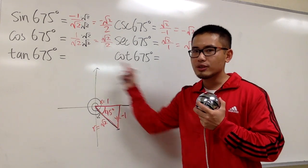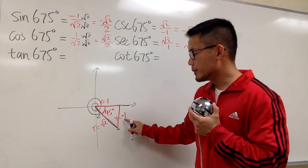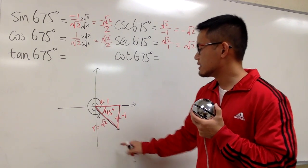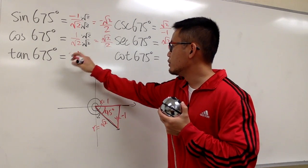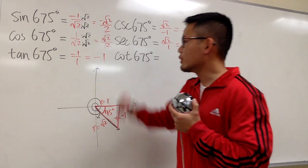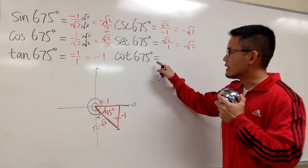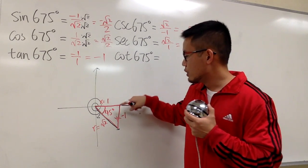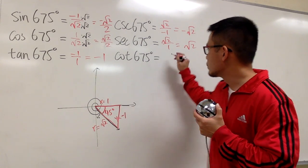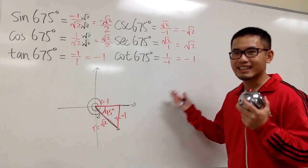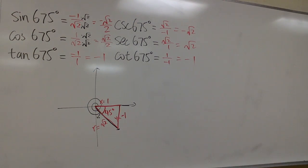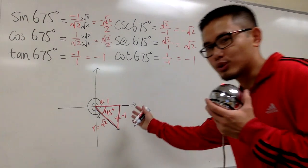At the end, we have tangent and cotangent. Tangent is going to be y over x. So it's negative 1 over 1. And you can just say this is negative 1 altogether. And for the last one, cotangent is x over y, which is 1 over negative 1. And you end up with negative 1. And that's it. So be sure you draw the picture.